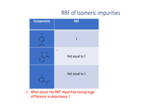It is a general assumption that the RRF of an isomeric impurity will be 1, but it is not always true. In some cases, RRF is not equal to 1 because the spectrum maxima is different for the isomer compared to the analyte. The question is: what about the RRF of impurities having a huge difference in absorbance?